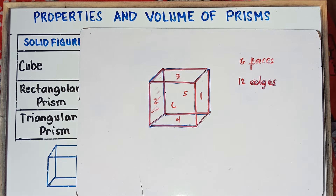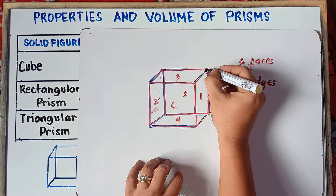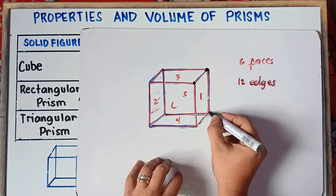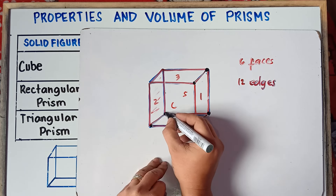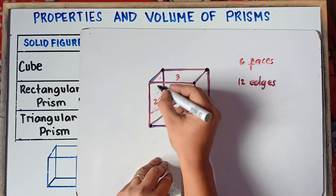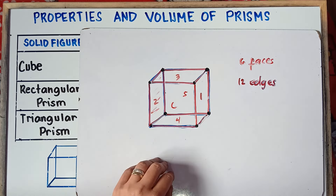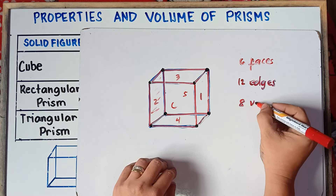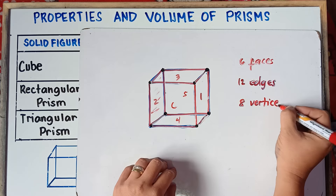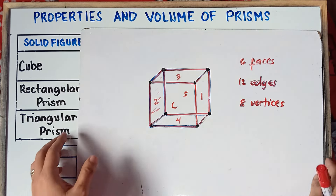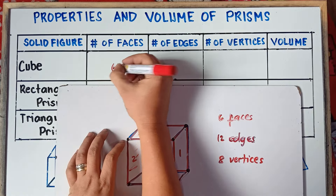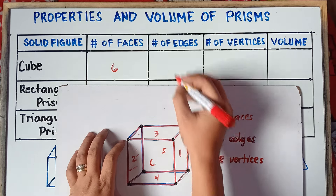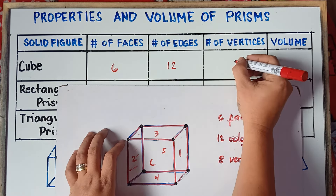So let's count the number of vertices. Counting each vertex: one, two, three, four, five, six, seven, and eight. So we have eight vertices. So for the cube: six faces, twelve edges, and eight vertices.